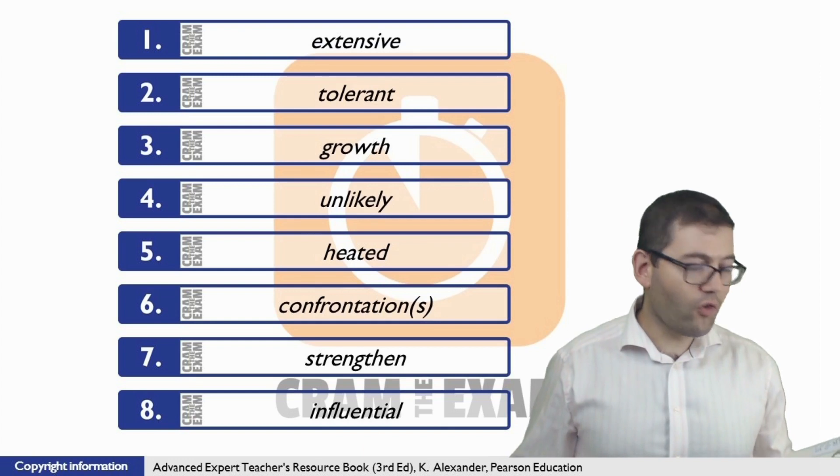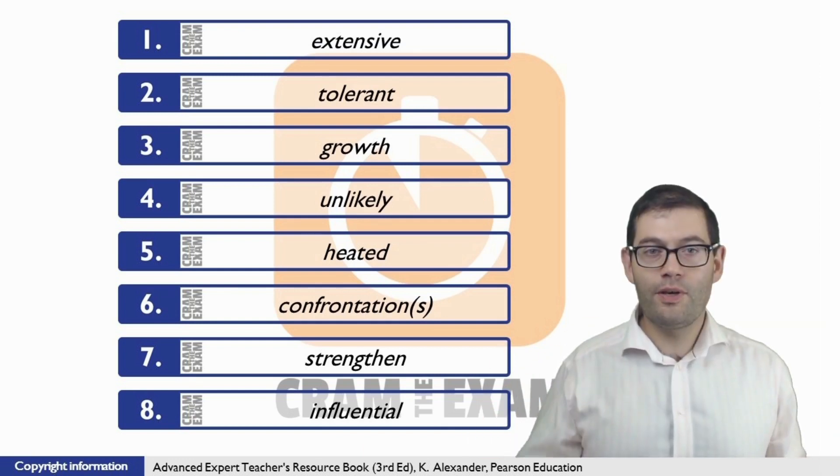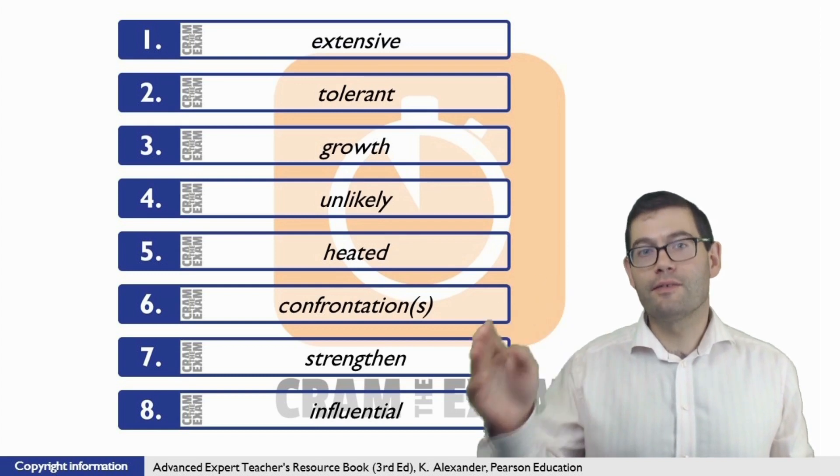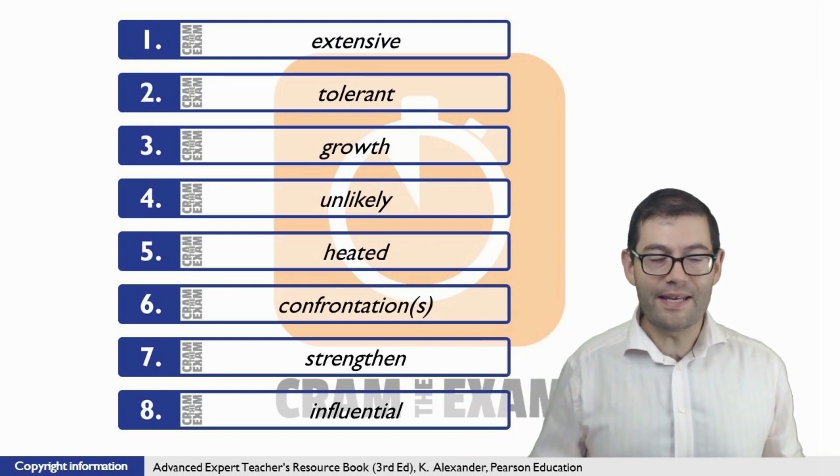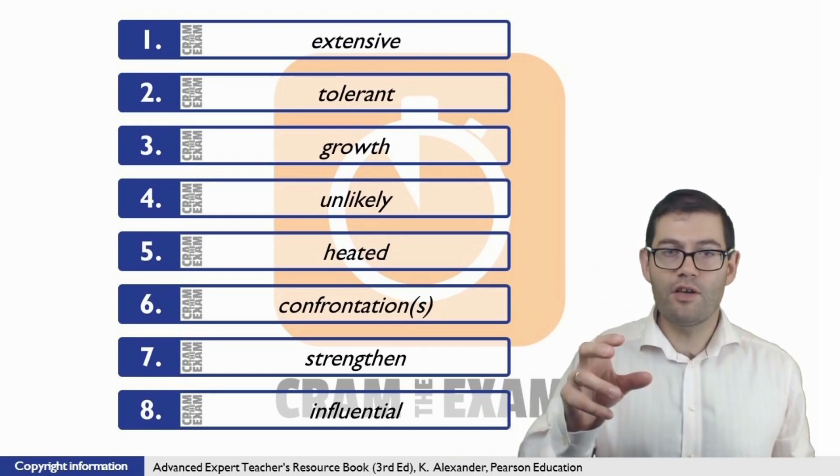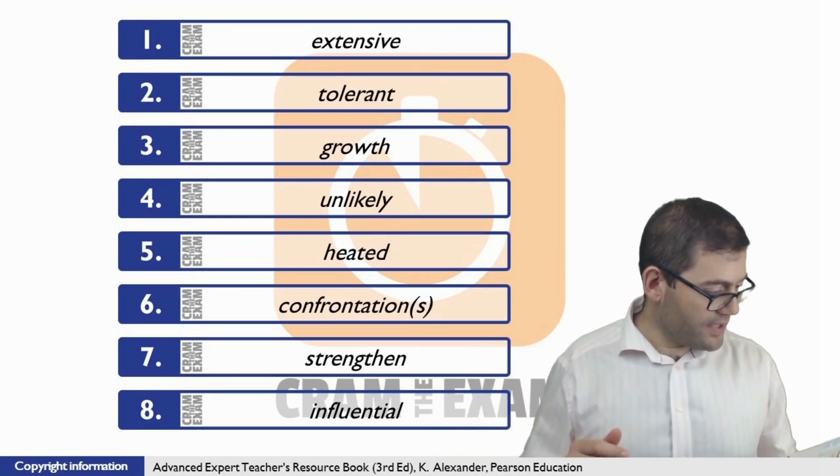Question number two. Wonderful standard language pattern: article, adverb, adjective, noun. And that's exactly what we need here. We need an adjective which is both modified by the adverb and which we need to modify the noun. So if we have a look at the stem word, it's tolerate. What is the adjective form of tolerate? Tolerant.